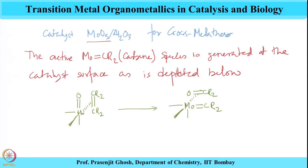This shows the active species and the precatalyst. The precatalyst, molybdenum oxide, reacts with an olefin to generate the active molybdenum carbene species along with a ketone. This active molybdenum carbene species then carries out the cross metathesis reaction.